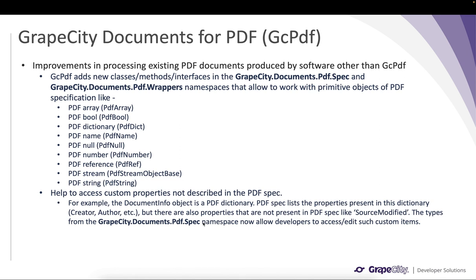Another addition to GC PDF is the introduction of new classes, methods, and interfaces in the pdf.spec and pdf.wrappers namespaces. These new classes help to work with primitive objects of the PDF specification like PdfArray, PdfPool, PdfDictionary, and so on. When working with PDF documents, objects like document info, annotations, and pages are high-level objects. Internally, document info is a PDF dictionary with certain accessible properties. The introduction of these new classes will allow developers to access and edit custom items in the PDF document.